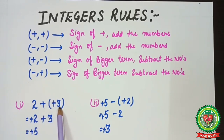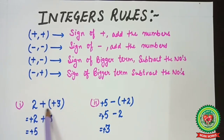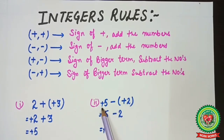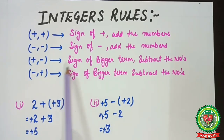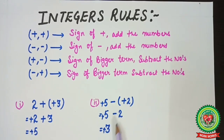For example: 2 + (+3) — outer sign is plus, so inner sign does not change, giving plus plus, so add: answer is +5. Next: +5 − (+2) — outer sign is minus, so inner sign changes from plus to minus, giving plus minus. Sign of bigger term subtract: 5 − 2 = 3. Now we will learn how to add and subtract rational numbers.